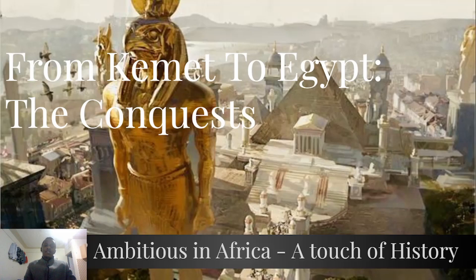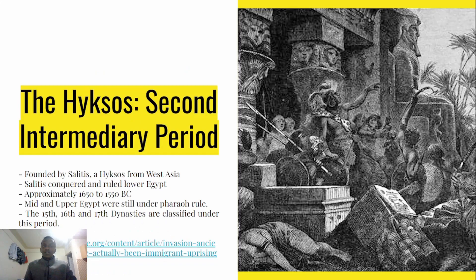...from Kemet to Egypt — a conquest that happened over time in what is now known as Egypt. Starting us off with the Hyksos, which happened during the Second Intermediate Period. It was founded by Salitis, who was a leader from West Asia. Salitis conquered Egypt, and at this point upper and mid-Egypt was still led by some pharaohs. This period ran from approximately 1650 BC and was mainly marked by the 15th, 16th, and 17th dynasties. I'll leave a link in the description so you can learn more about the Second Intermediate Period.